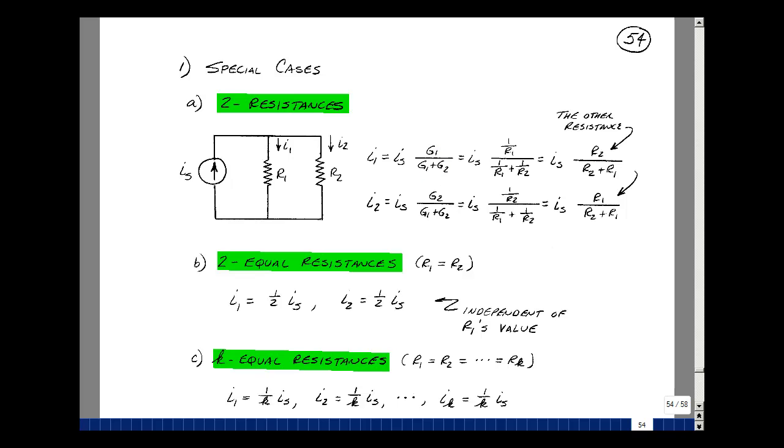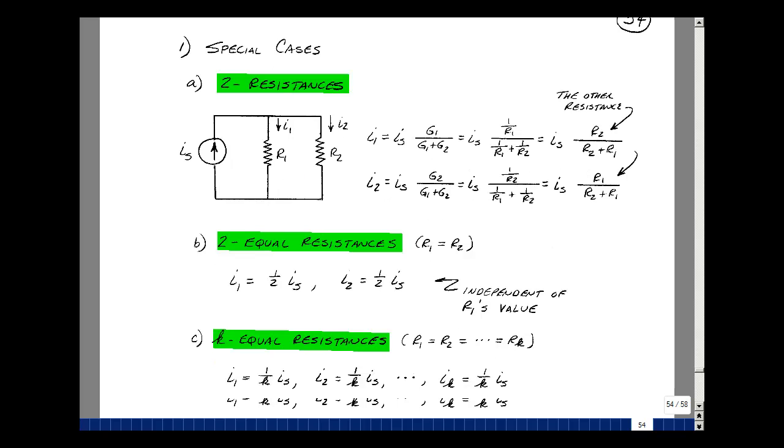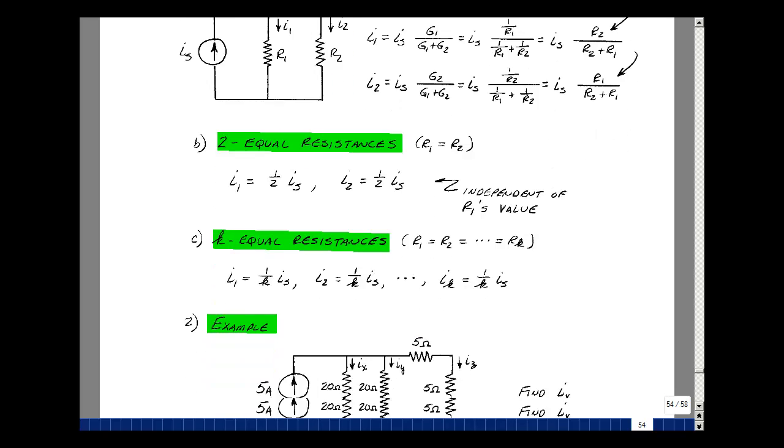Let's look at the case of two equal resistances, where G1 equals G2. That would give me a half. You have two equal resistances, then half the current goes here, half the current goes here. Suppose you have K equal resistances in parallel. Simply taking your general conductance rule again, we'd have G1 over G1 K times. So the G's drop out, you just have one Kth the current. This is a special case of this one. Here's an example.